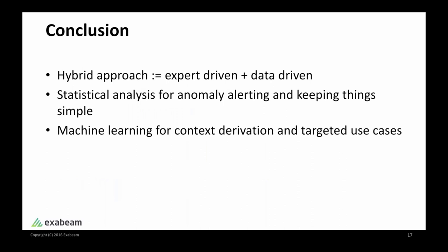In conclusion, I have shown our philosophy on how we best use data science for UBA. We take a hybrid approach to combine expert-driven and data-driven methods — what I call security knowledge-infused data science. For the core UBA system, we use statistical analysis to raise anomalies to keep things simple, but we rely on machine learning to both gain understanding of complex networks for context derivation and for certain selected targeted use cases. Let me open up the floor for Q&A.